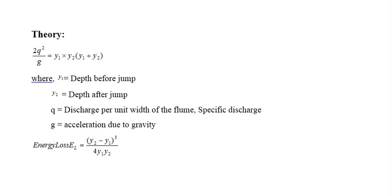In the first equation, y1 is the depth before the jump and y2 is the depth after the jump. Small q is the discharge per unit width of the flume, or the specific discharge, and g is the gravitational acceleration. Finally, the energy loss equation depends entirely upon the upstream and downstream depths — if we have both values, we can easily estimate the energy loss.